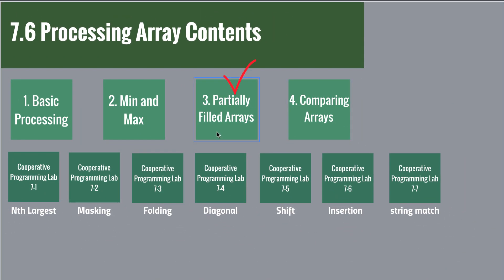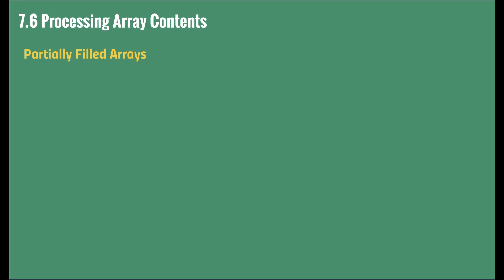Now let's move to the next topic, the partially filled arrays. The partially filled arrays happens when you declare the larger size than actual number of elements that you use. Because sometimes we don't know the number of items to store in an array. The exact size of array can be determined in the runtime.